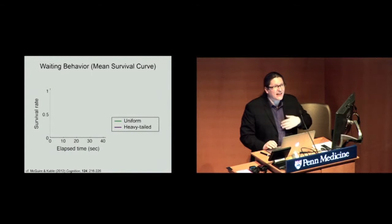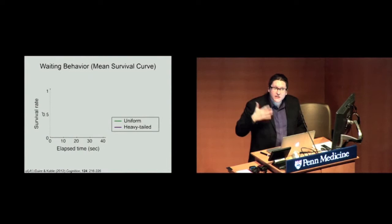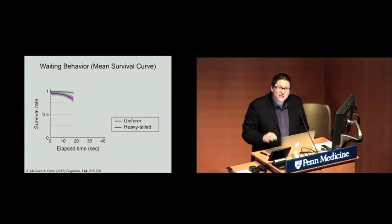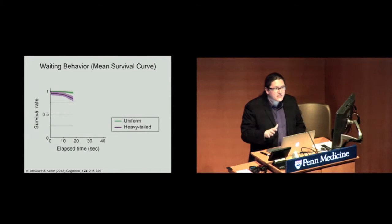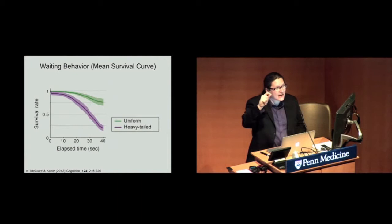So our first question was whether people learned that from experience. From experience with the temporal statistics, did they learn to be as persistent as possible in one environment, and to have limited persistence in the other environment? And what I'm showing here is the survival rate, the likelihood that the subject's still waiting for the token to pay off as a function of elapsed time in the two environments. What you see is there's very little difference over the first 15 seconds or so. People are pretty persistent in both the uniform and the heavy-tailed environment. But after that, persistence drops off dramatically for the purple tokens in the heavy-tailed environment. People are mostly quitting after about 20 seconds, whereas persistence is maintained in the uniform environment. People are mostly staying put and waiting all the way through the end for the green tokens.